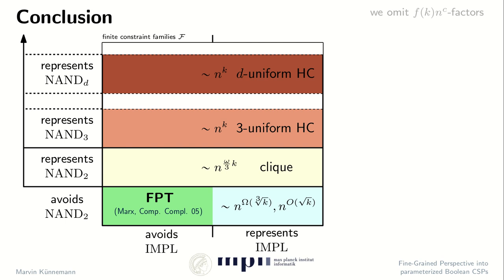So we arrive at the following situation. Our classification yields essentially four regimes: a brute force regime for all functions that represent the ternary NAND gadget or higher; then a clique regime for those that only represent binary NAND constraints; an FPT regime if the constraint family avoids both binary NAND and duplication; and then this technically quite interesting implications regime with a subpolynomial dependence on K in the exponent of n.